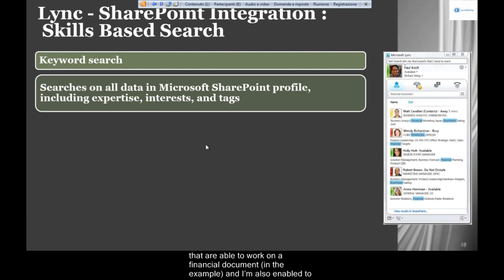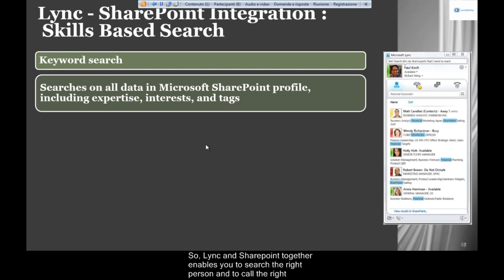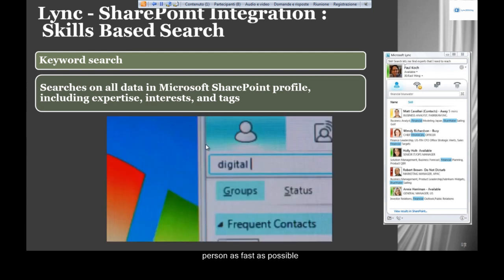I'm also able to pick out the person who is online at that moment. In the image, you can see two persons who are online, so I can launch an instant messaging session or a video call saying, 'Hi, I need help with a financial document.' Link and SharePoint together enable you to find and contact the right person as fast as possible.